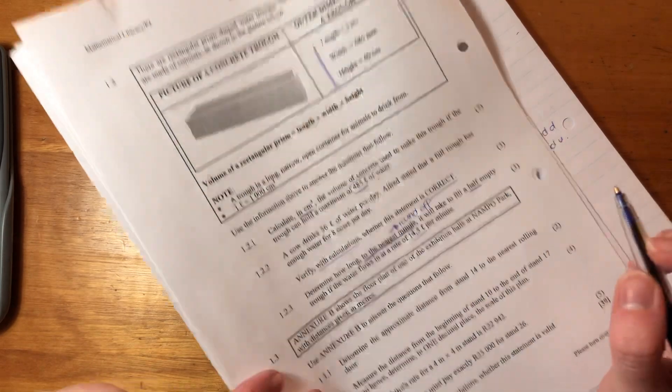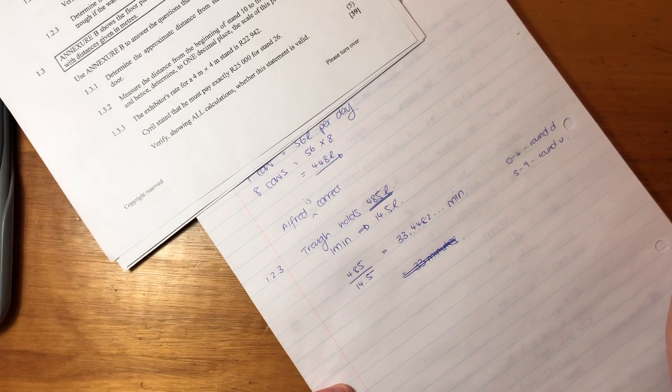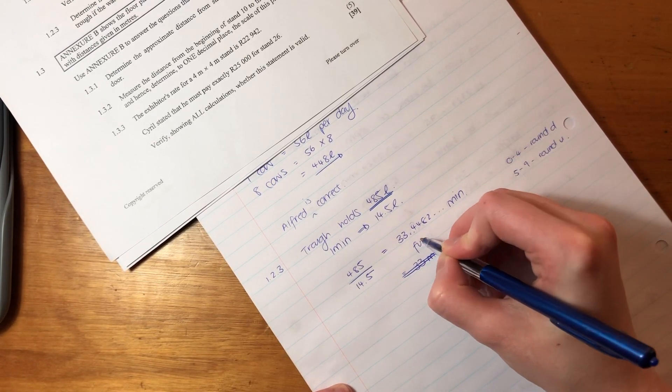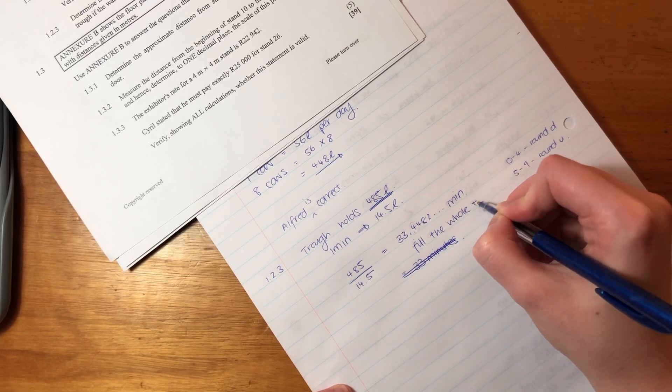So what we need to do here is instead of rounding it off at this stage to 33 minutes, we say that's how long it takes to fill the whole trough.